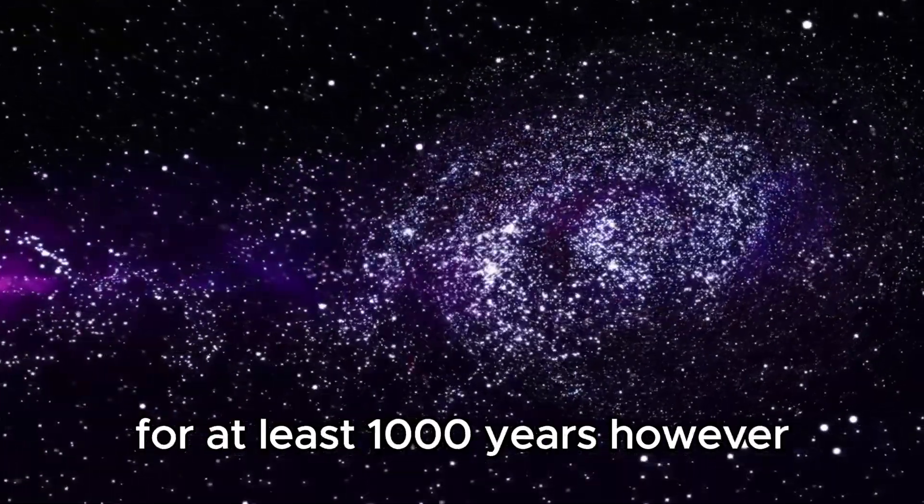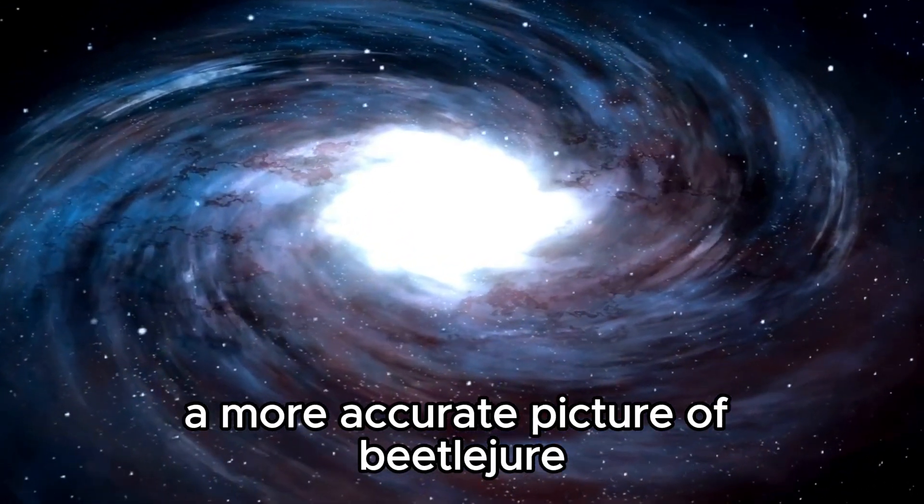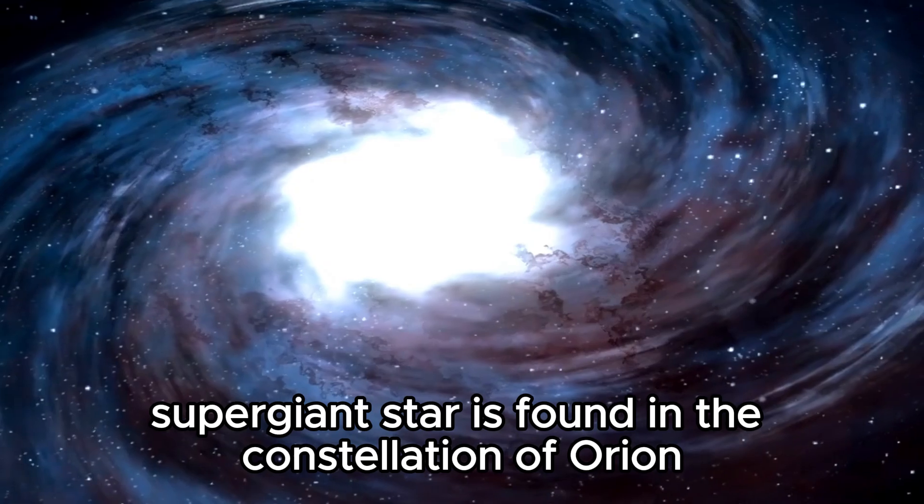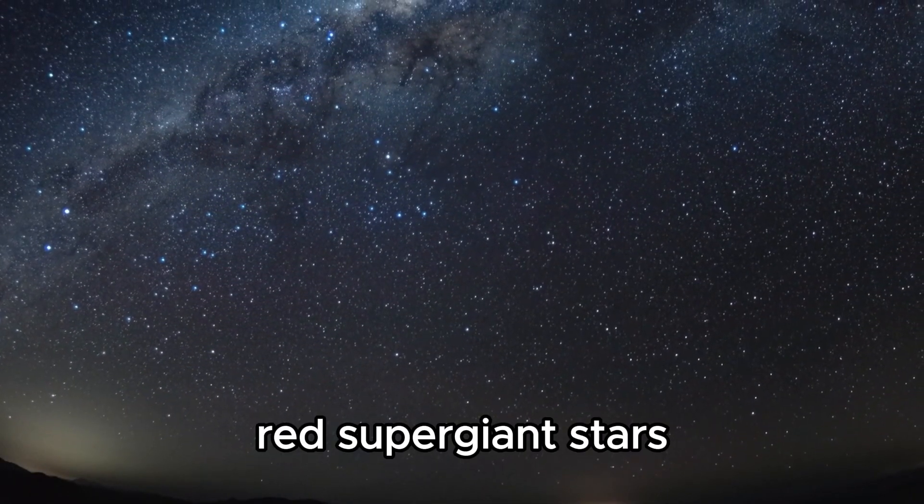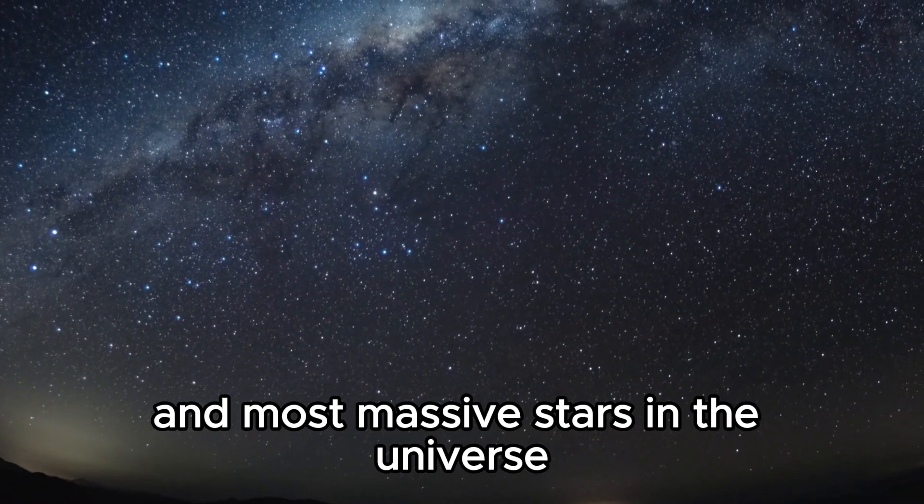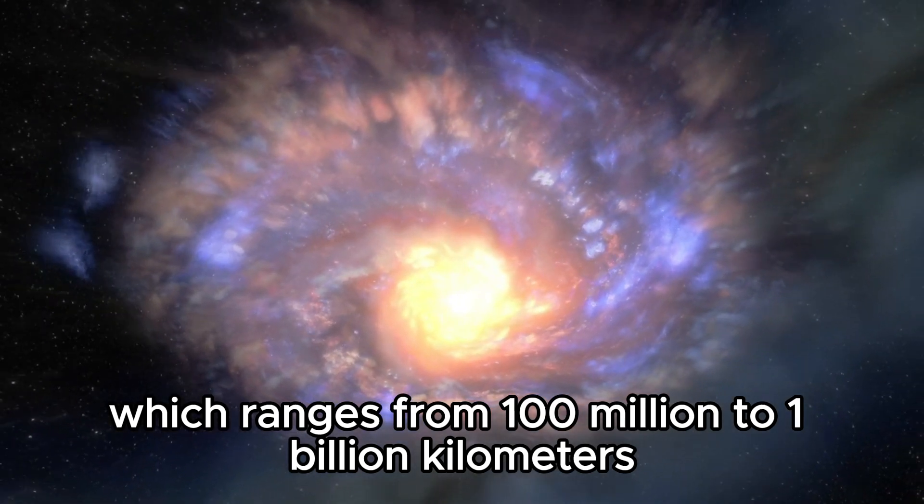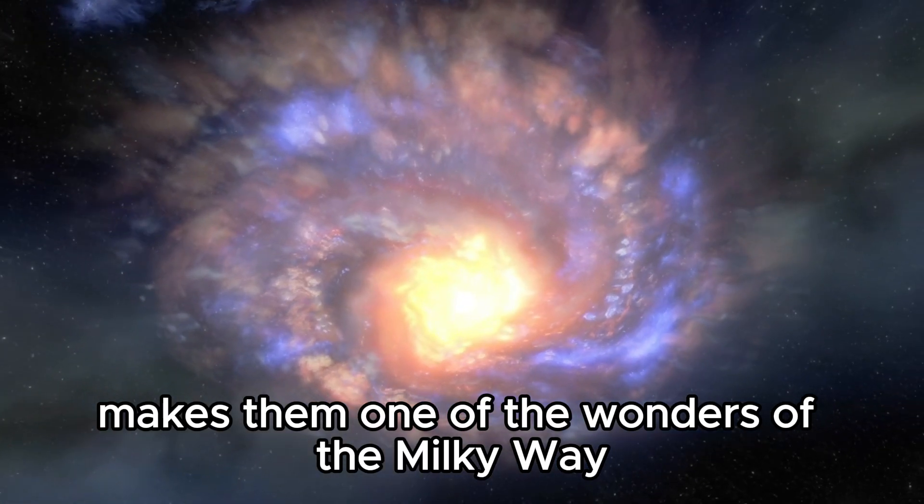However, advancements in astronomy have given astronomers a more accurate picture of Betelgeuse and its characteristics. The red supergiant star is found in the constellation of Orion and is one of the biggest stars out there. Red supergiant stars are some of the largest and most massive stars in the universe. Their diameter, which ranges from 100 million to 1 billion kilometers, makes them one of the wonders of the Milky Way.